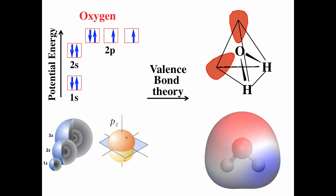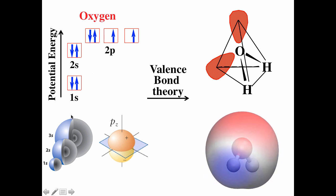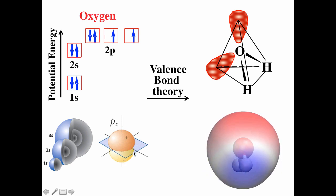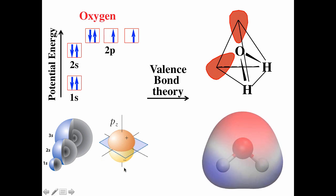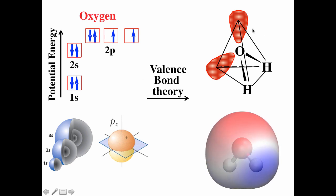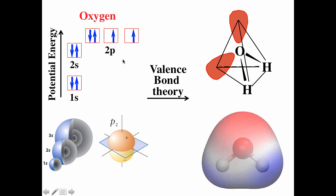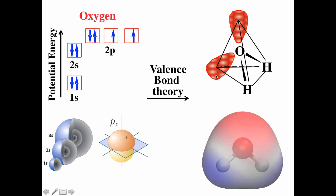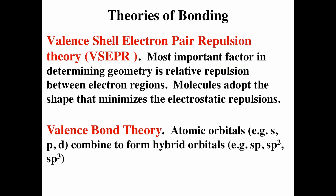Valence bond theory is a little different. The idea is: how do we go from atomic orbitals — S is spherical, P is dumbbell-shaped, with three P orbitals per shell except the first — to our tetrahedral electron geometry from VSEPR? Valence bond theory says that atomic orbitals are hybridized into hybrid orbitals that explain the tetrahedral electron geometry when you have four regions of electron density. Atomic orbitals combine to form hybrid orbitals, and that explains the shapes we see in VSEPR theory.